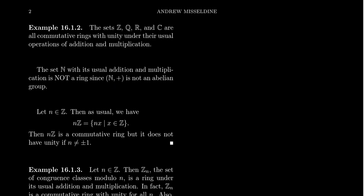Let's consider examples. The sets Z, Q, R, and C all have both addition and multiplication where multiplication distributes over addition. These are all examples of commutative rings with unity — they each have unity (the number 1), multiplication commutes, multiplication is associative, and distributive laws hold.